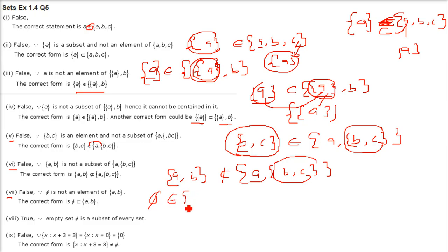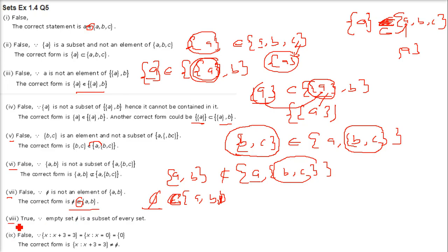Seventh: φ ∈ {a, b}. φ is not listed as an element here. But φ is in fact a subset of every set. So the correct form is: φ ⊆ {a, b}. Eighth: φ ⊆ {a, b, c}. This is correct — phi is a subset of every set.